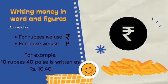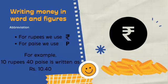Now, how do we write money in words and figures? For rupees, we use the symbol R, and for paisa, we use P.